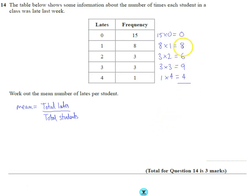So let's add these up now. So the total number of lates is eight, sixteen, twenty-five, twenty-nine.